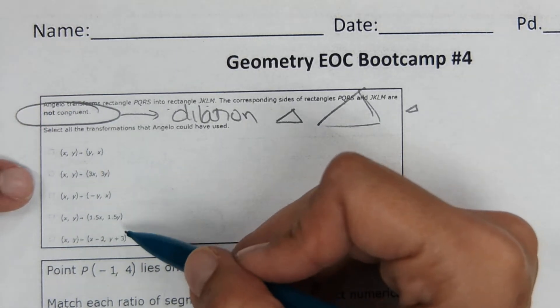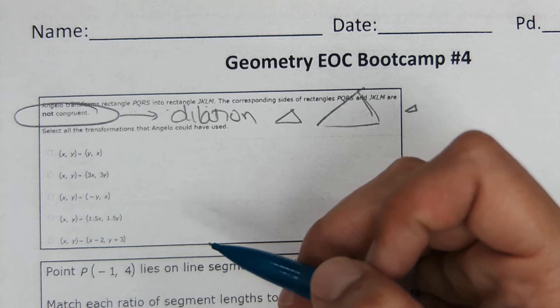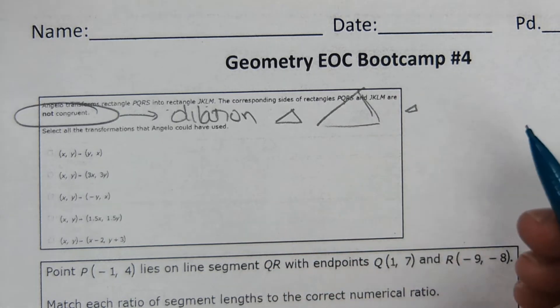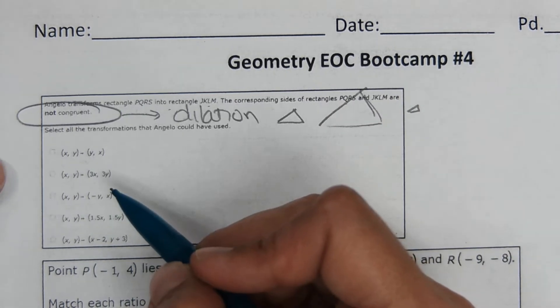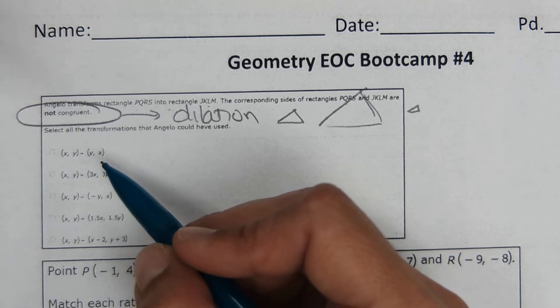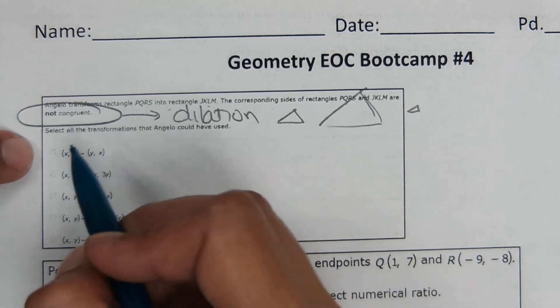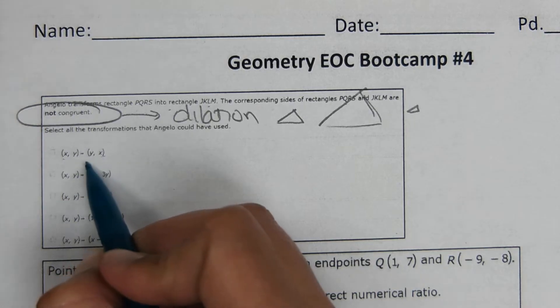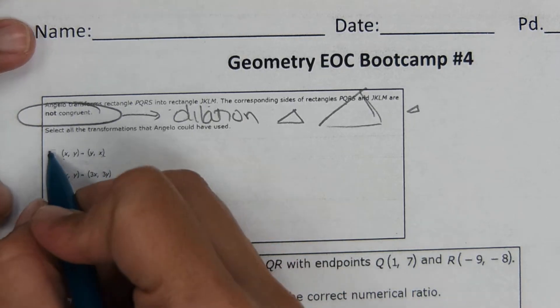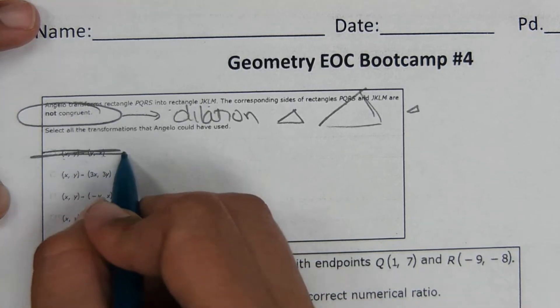So as I go through this, I'm looking for anything that's a dilation or possibly a stretch. I'm looking for them to multiply the coordinates by something to make the shape bigger or smaller. So this here, they're just reflecting that point. So it's not growing or shrinking. So not that one.